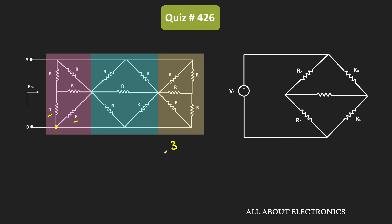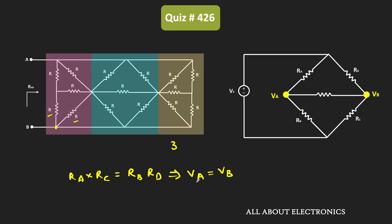Now for the Wheatstone bridge, if the product of the resistance of the opposite arms are equal — in other words, if Ra times Rc is equal to Rb times Rd — then we can say that the voltage at these two nodes are equal. That means if this condition is satisfied, then voltage Va is the same as Vb, and no current will flow between the two terminals because both nodes are at the same potential.